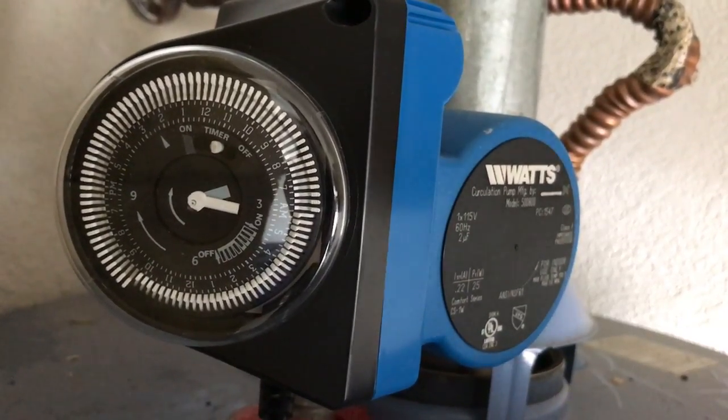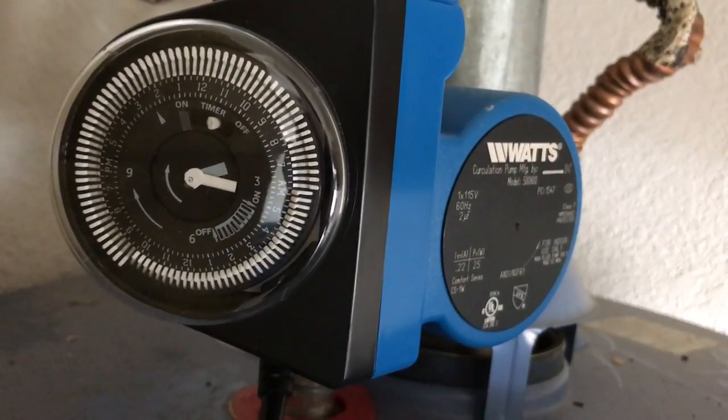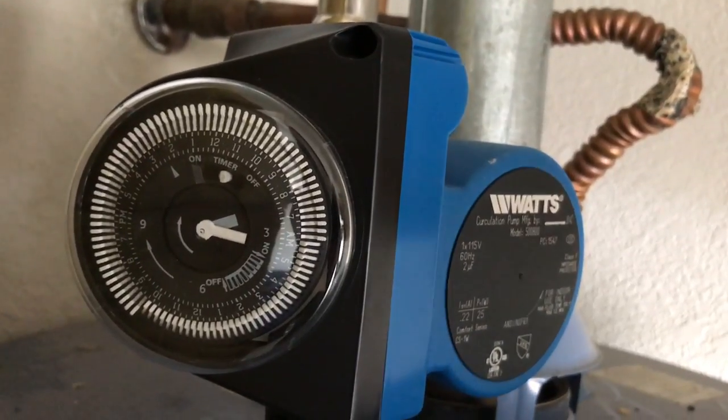All right, so let's talk about how to set the timer on a Watts 500-800. The process is the same for the Grundfos 59-59-16, so you can follow the same steps.